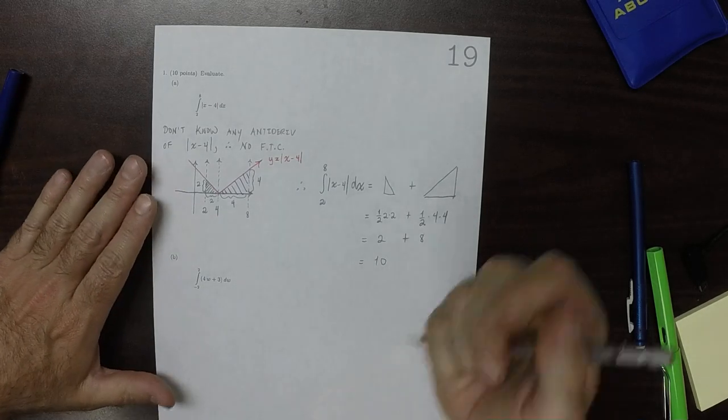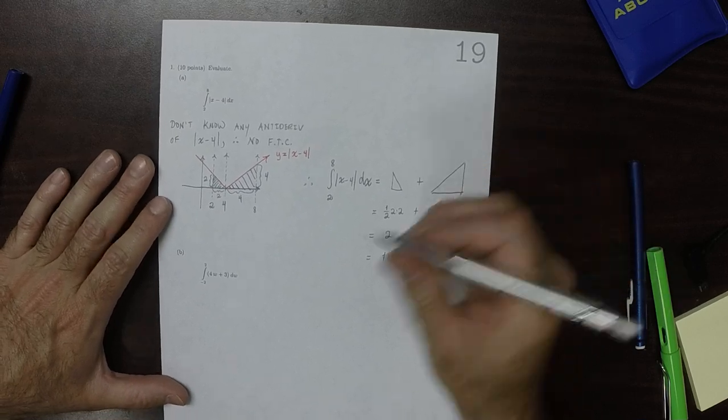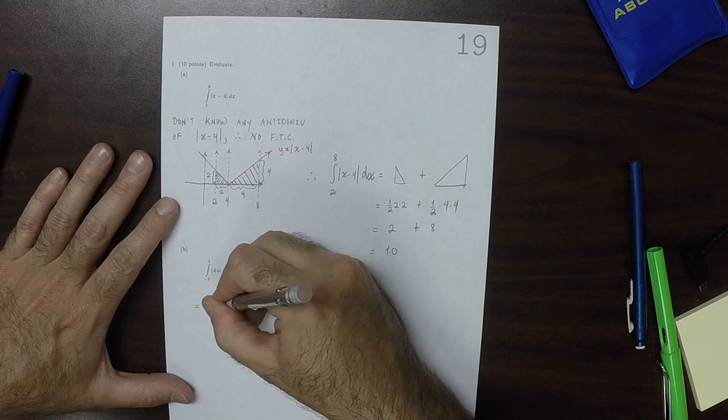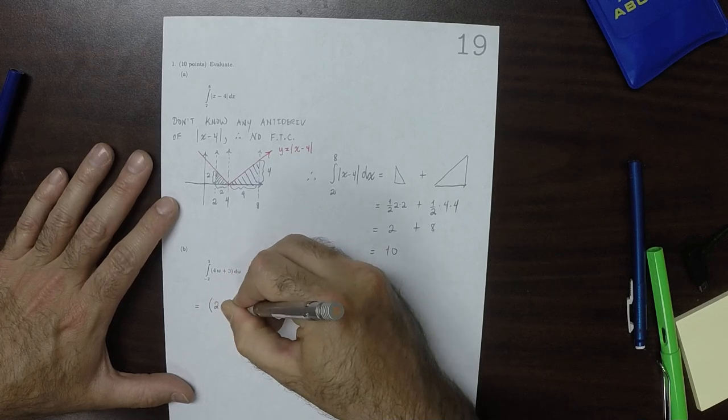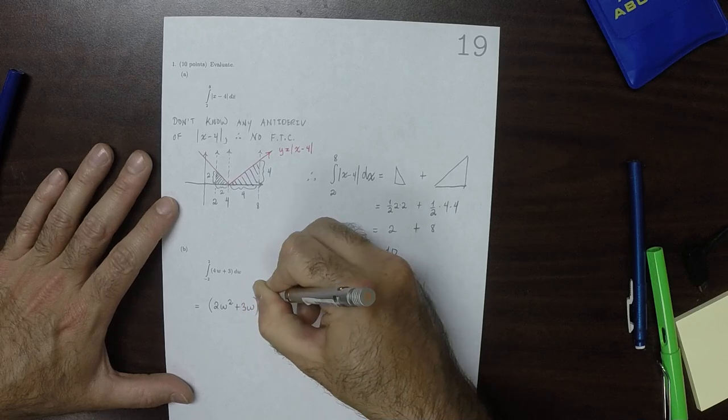For part b, we can use the fundamental theorem. So this would be 2w squared plus 3w, evaluated from negative 2 to positive 2.